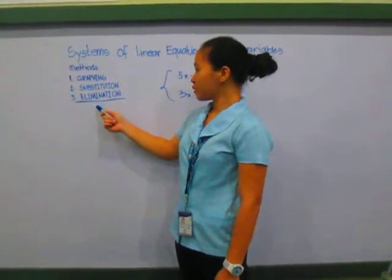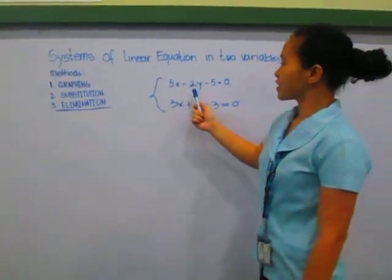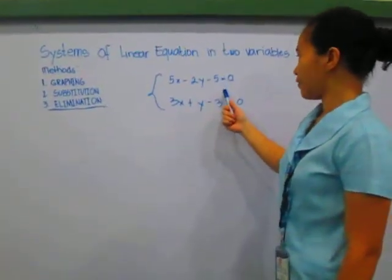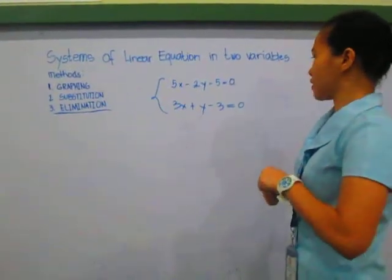I will be using the elimination method for my solution. And this is my given: 5x minus 2y minus 5 equals 0, and 3x plus y minus 3 equals 0.